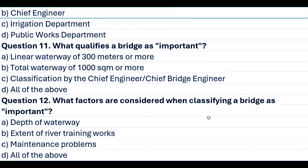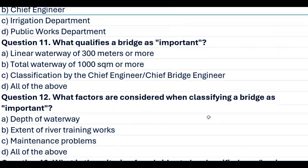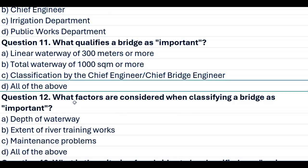Question 11. What qualifies a bridge as important? A. Linear waterway of 300 meters or more. B. Total waterway of 1000 SQM or more. C. Classification by the chief engineer or chief bridge engineer. D. All of the above. Answer D. All of the above.